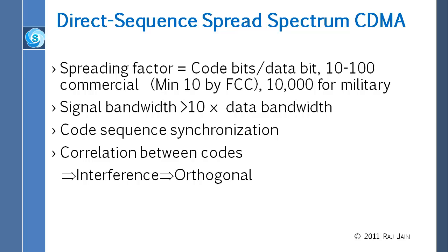How does the receiver know what your code is? Basically, you negotiate that — you are allocated a code. It's like a frequency: how do you know which frequency to use? Somebody tells you, and somehow you negotiate using this frequency or this code. So just like frequency division multiplexing or time division multiplexing, here we have code division multiplexing.